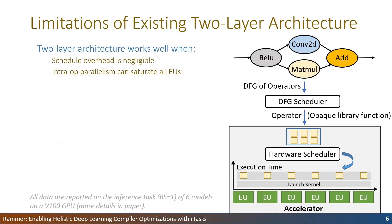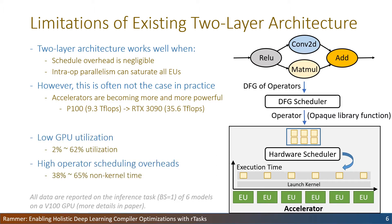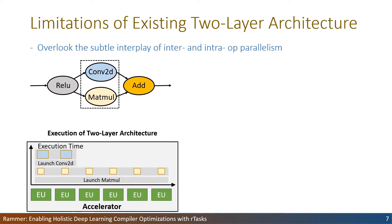This two-layer architecture works well when the operator scheduling overhead is negligible and when the intra-operator parallelism can saturate all execution units in an accelerator. However, in practice, this is often not the case. The main reason is that the performance of DNN accelerators increases very fast. For example, the single-flow performance of the latest RTX 3090 GPU is about four times that of the widely used P100 GPU. This results in low device utilization and pronounced operator scheduling overhead compared to operator execution time. We evaluated six models on a V100 GPU — GPU utilization could be as low as 2% and operator scheduling overhead could be up to 65%.